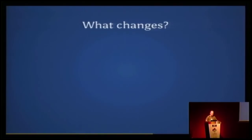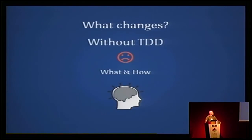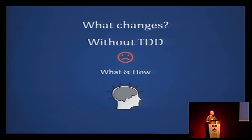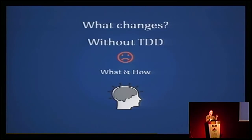What changes in your brain when you use TDD? Without TDD, you go from the business requirement straight to the code, and you have to take care of two things simultaneously: what the code needs to do — deliver this functionality — and how it needs to do it, like using a for loop or calling a specific function. These are two very different things, the what and the how, and your brain is fully concentrating on both at the same time.